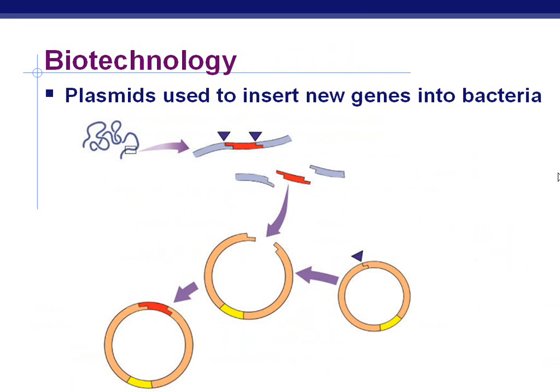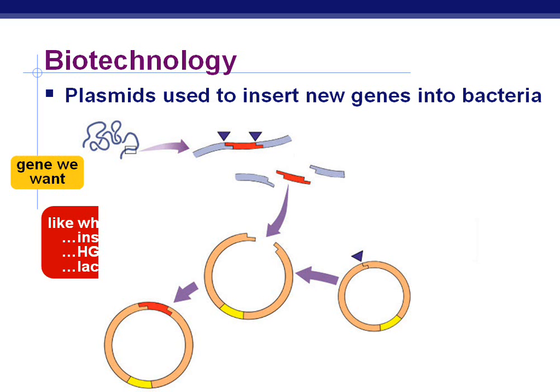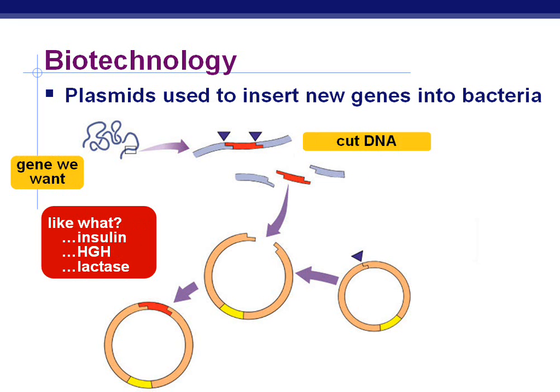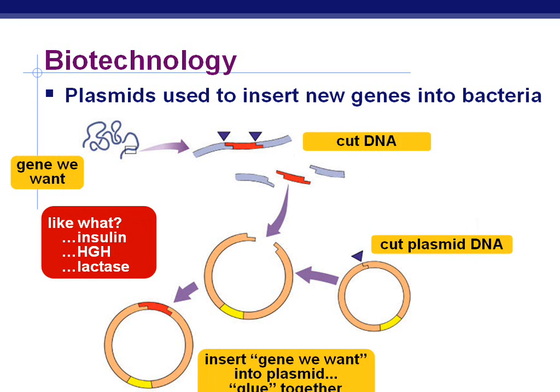In biotechnology, we use plasmids to insert new genes into bacteria. We take the gene that we want — such as insulin, human growth hormone, or lactase — we cut the DNA, we cut the plasmid DNA, and we insert the gene that we want into the plasmid. In other words, we glue them together with a ligase, and we end up with a recombinant plasmid.